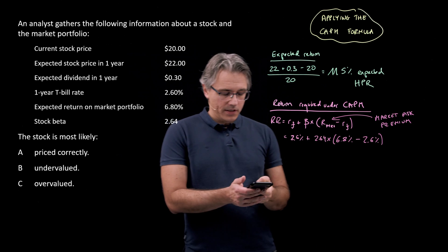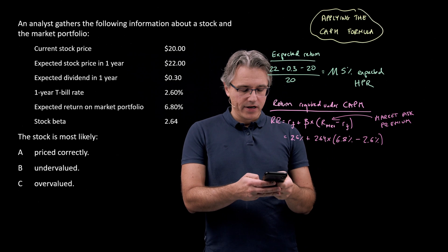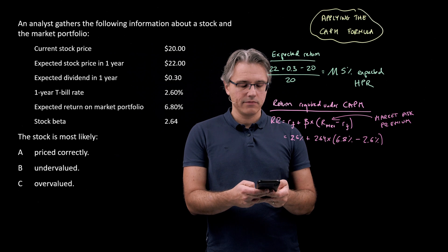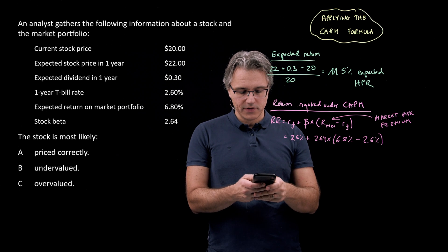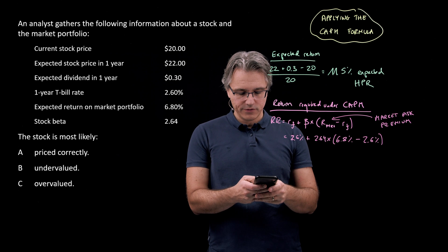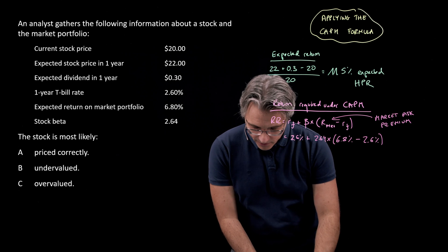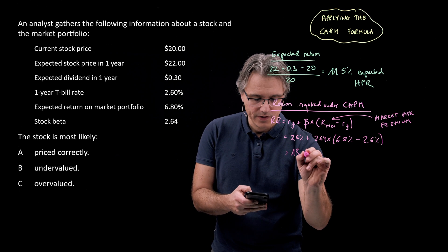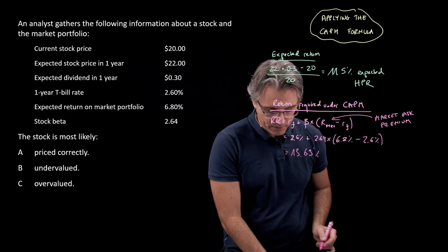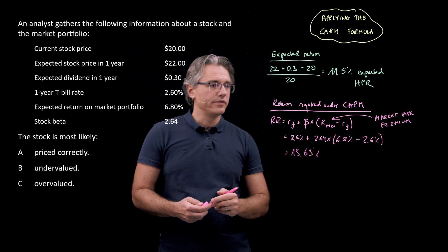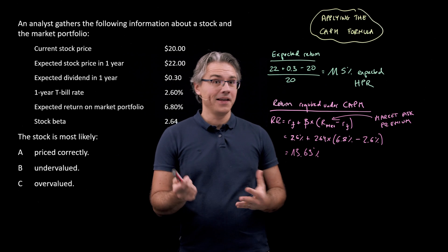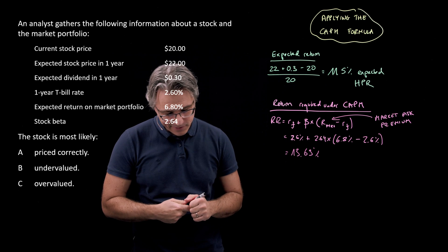So let me do what's in the bracket. 6.8 minus 2.6, that's 4.2. Multiply that by 2.64 and add 2.6. Okay, I am looking at a result of roughly 13.69%. Now, this is easy to compute. What you now have to do is compare these two and come to the correct conclusion.